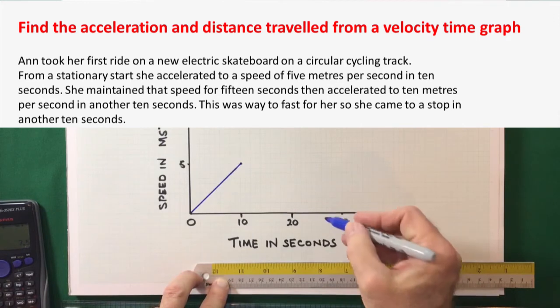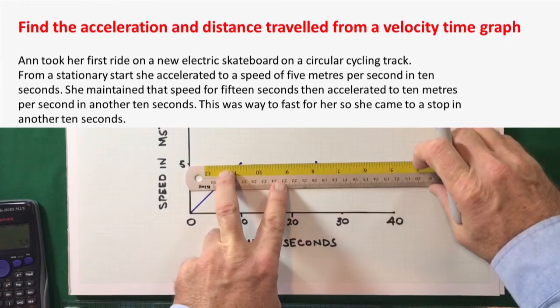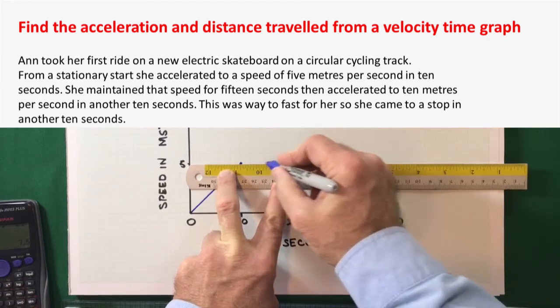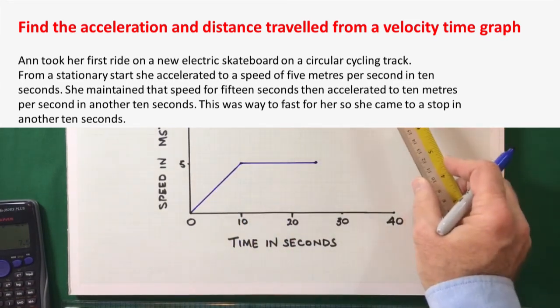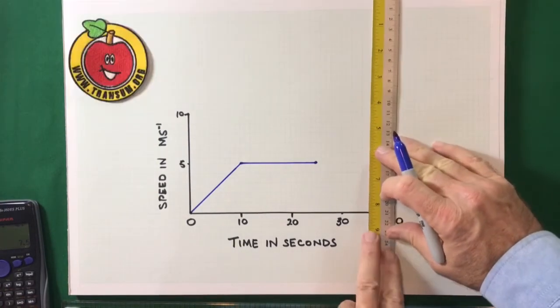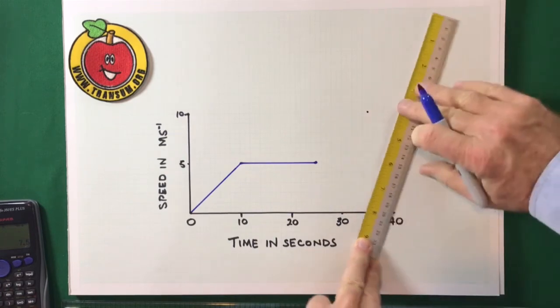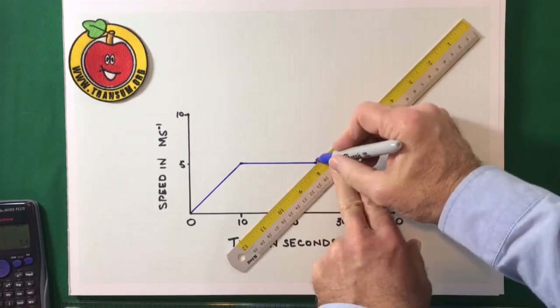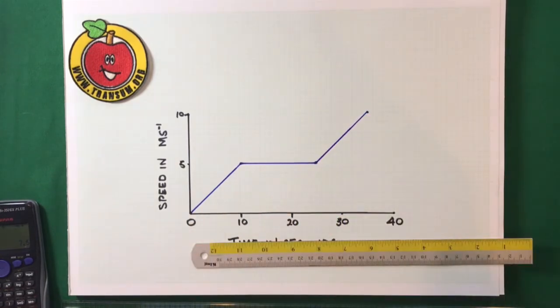And then I'll plot the information in the question on the graph. So, constant speed is a horizontal line, which she maintained for 15 seconds. And then she accelerated until her speed was 10 meters per second. But as soon as she got to that really fast speed, she decided it was a bit too fast. So, she decelerated down to a stop.